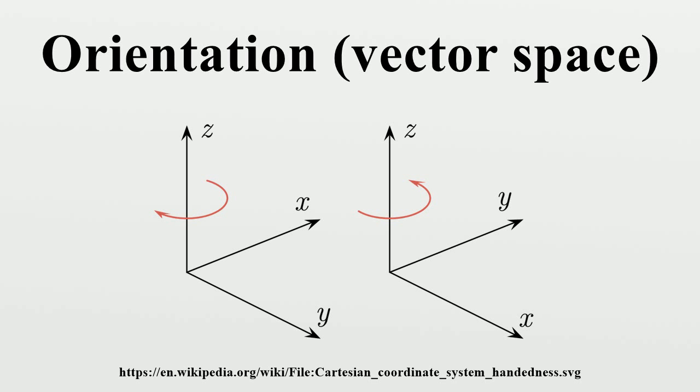The bases B1 and B2 are said to have the same orientation if A has positive determinant, otherwise they have opposite orientations. The property of having the same orientation defines an equivalence relation on the set of all ordered bases for V.